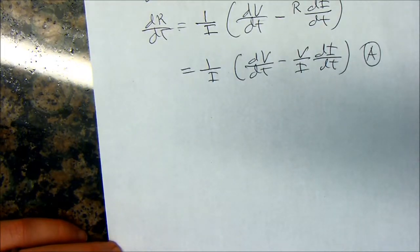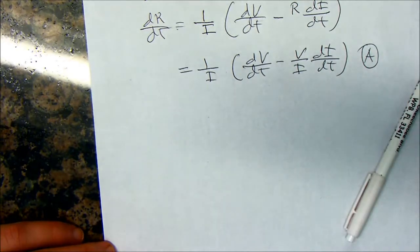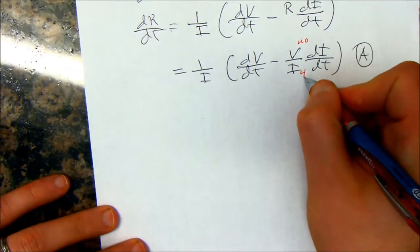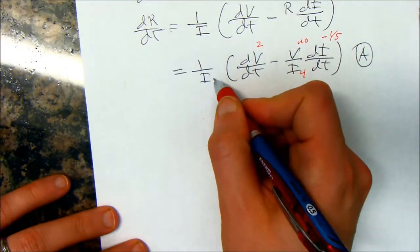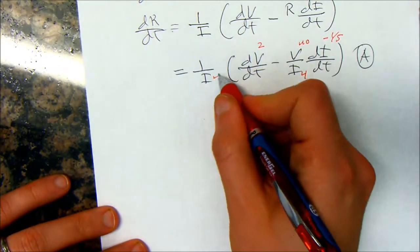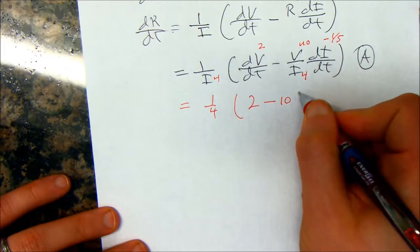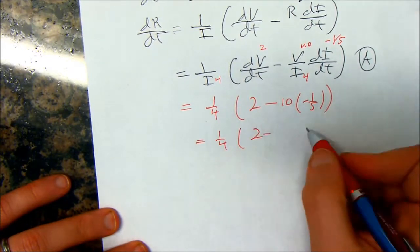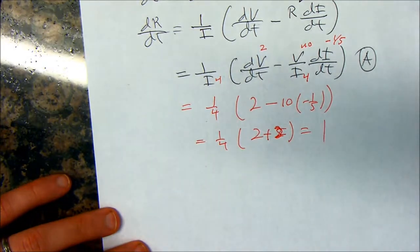So, find the rate at which R is changing when V equals 40 and I equals 4. Now, you're just plugging in. So, V equals 40. This is 40. I equals 4. dV/dt is 2. And then this is negative 1/5. The I is 4. So, I end up with 1/4 times 2 minus, 40 over 4 is 10, times negative 1/5. It's equal to 1/4 times 2 plus 5, equals 1. So, I got 1.